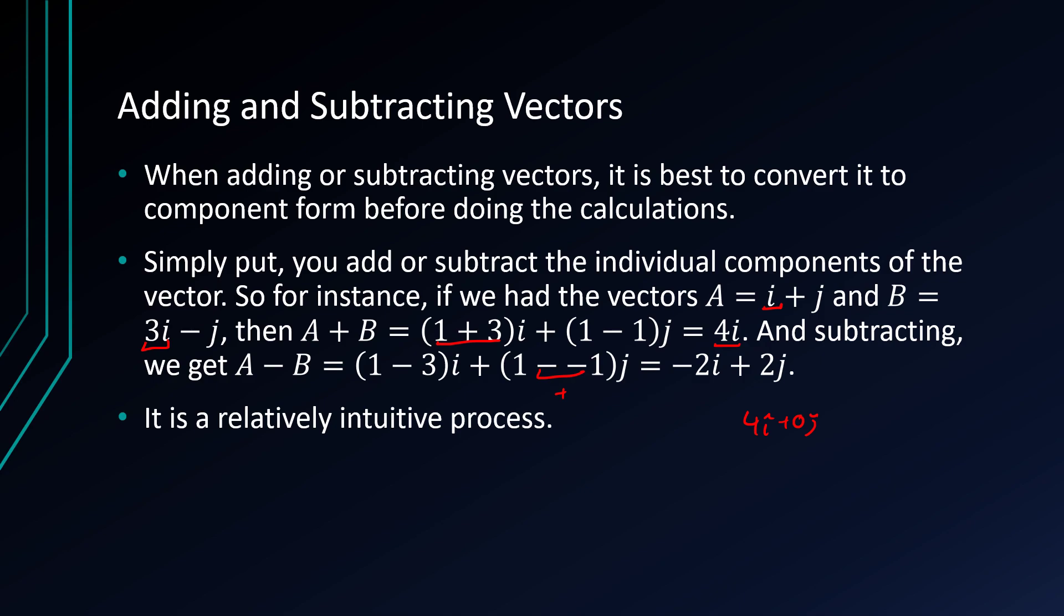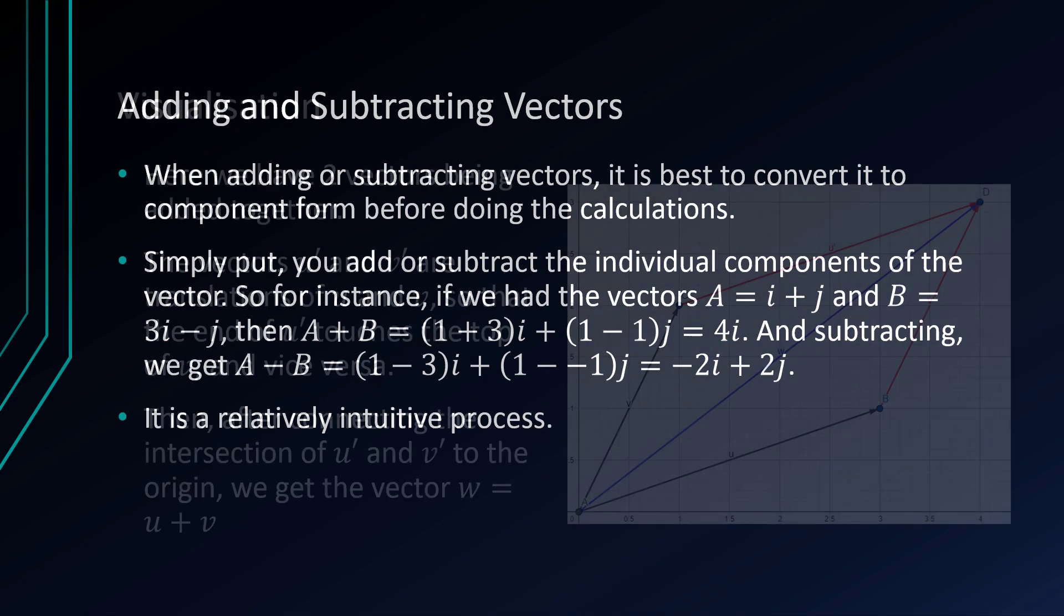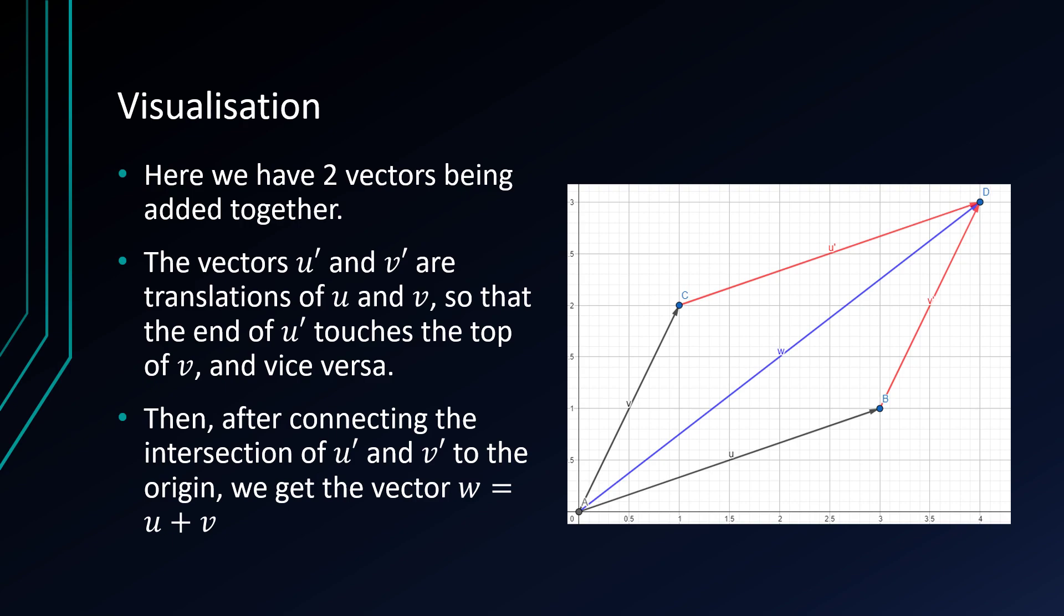But how does this look on the ij plane when you're adding vectors? Well, it would look something like this. If we have two vectors being added together.